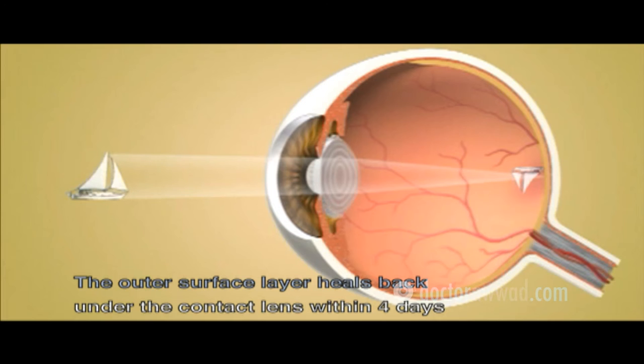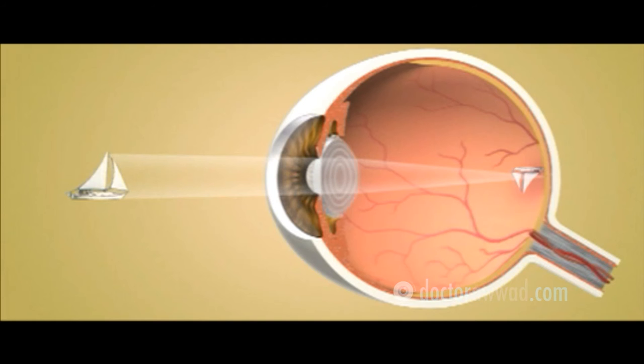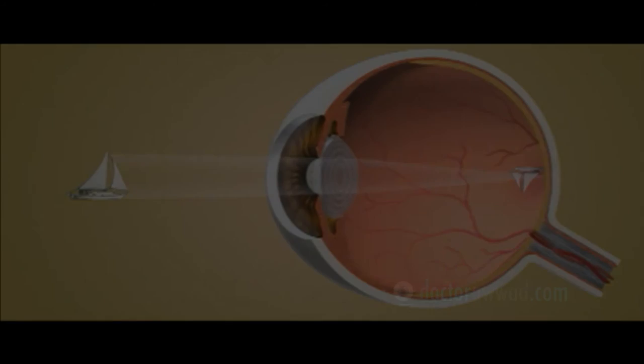The outer skin of the cornea will regenerate, protected by the contact lens, within three to four days, after which the contact lens is removed. The reshaped cornea focuses light more accurately on the retina.